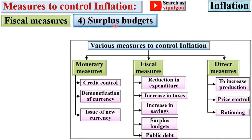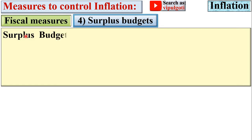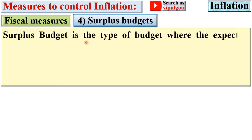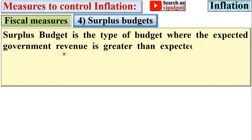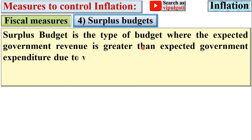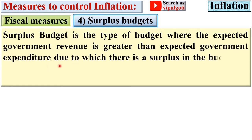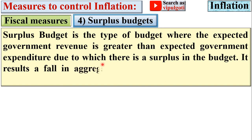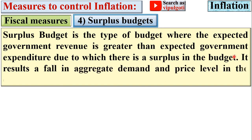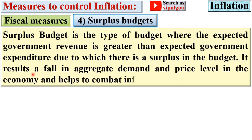Next: surplus budgets. A surplus budget is a type of budget where expected government revenue is greater than expected government expenditure, resulting in a budget surplus. This leads to a fall in aggregate demand and price level in the economy, helping to combat inflationary situations.